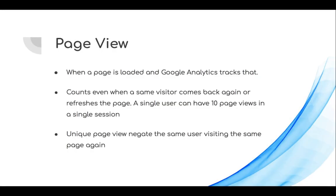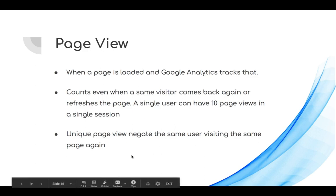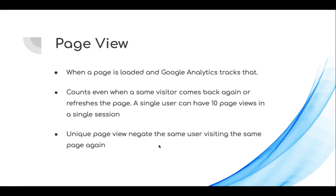The next term is page views. A page view is counted every time a page is loaded — Google Analytics tracks each load, even if the same visitor returns or refreshes. A single user can have 10 page views in a single session with no limit. There is also a term called unique page views, which does not count the same user visiting the same page again. For example, if a visitor views 4 pages but revisits the homepage, total page views are 4 but unique page views are 3.